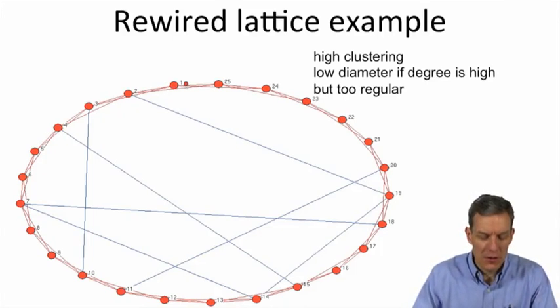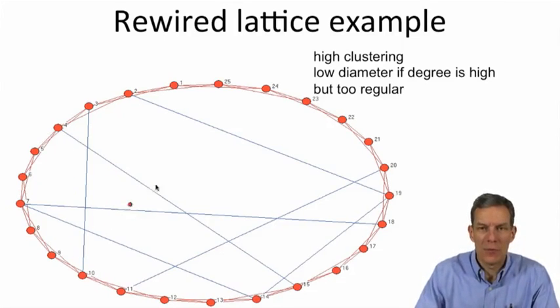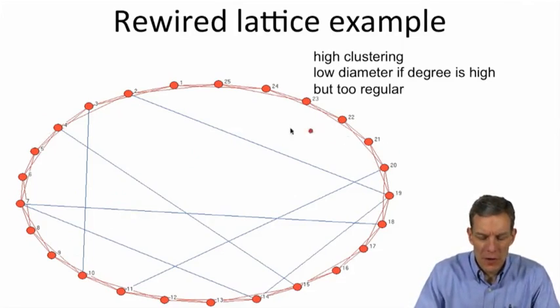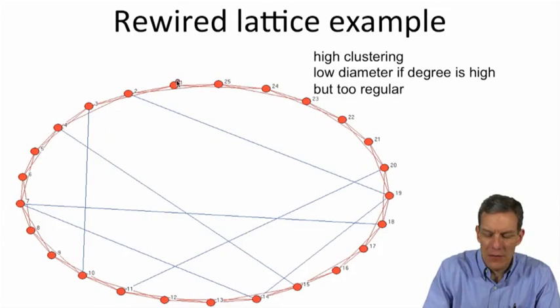Then what you can do is, actually what I've done in this picture, is not rewire the links but just add a few random links. Let's just stick a few random links in the network. Initially, if you wanted to get, without these random links here, if you wanted to get from node 1 to node 15, your path length would be quite far.